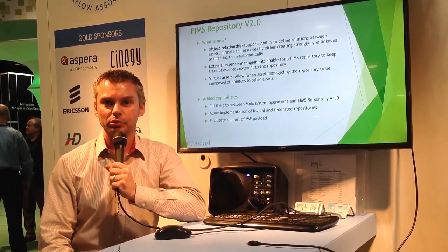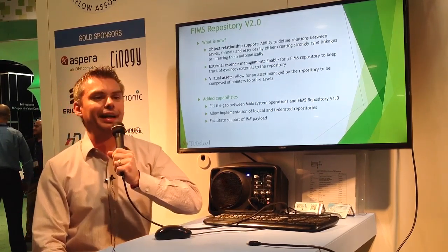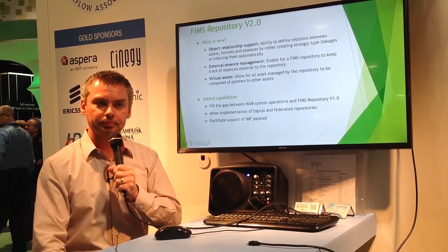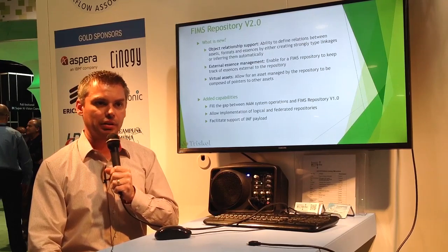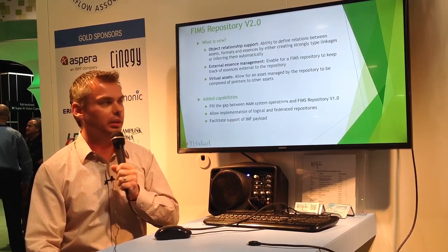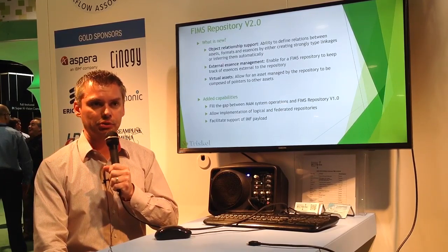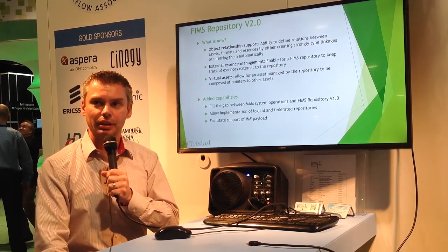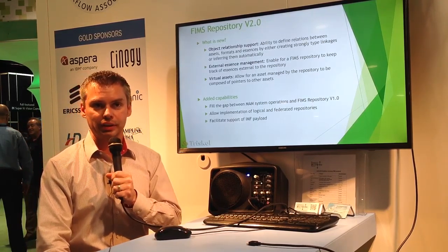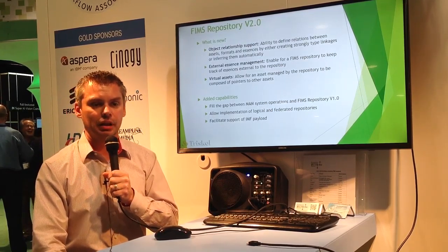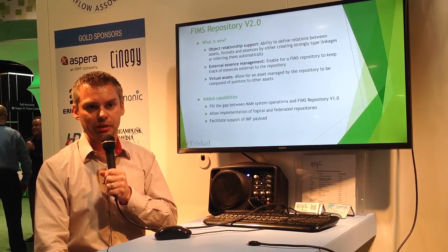For version 1.2, we are adding some new capabilities to the interface. We started by adding object relationship support, providing the feature sets that enable linkage of assets together. We're also adding new features to manage external essences to the repository. And the last one is virtual asset — a brand new concept that allows assets that do not really exist to be managed within the repository itself.